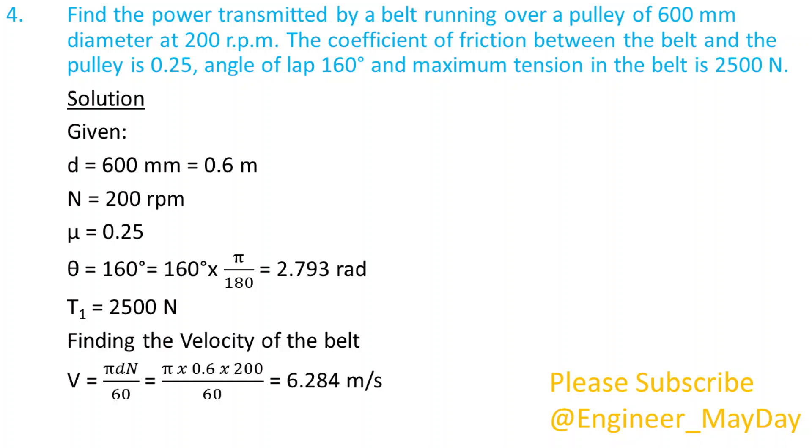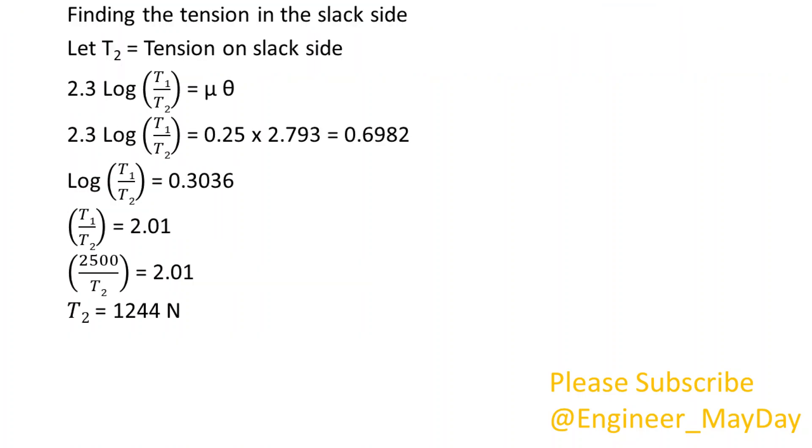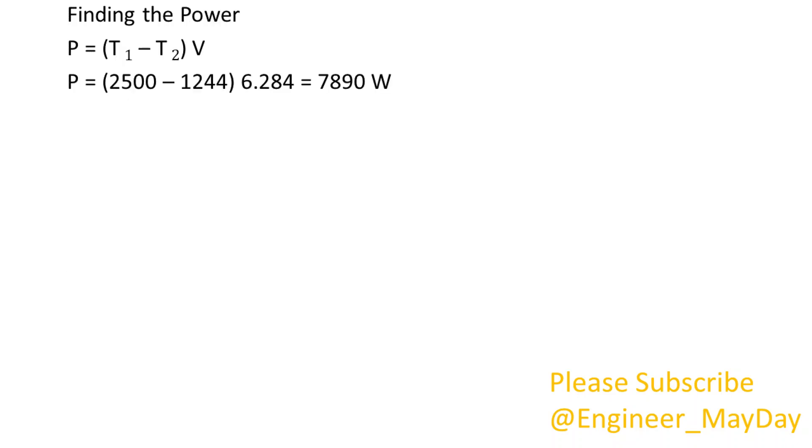Finding the velocity of the belt, V equals 6.284 meters per second. Finding the tension in the slack side, let T2 equals tension on slack side, T2 is equal to 1244 newtons. Finding the power, P equals 7890 watts.